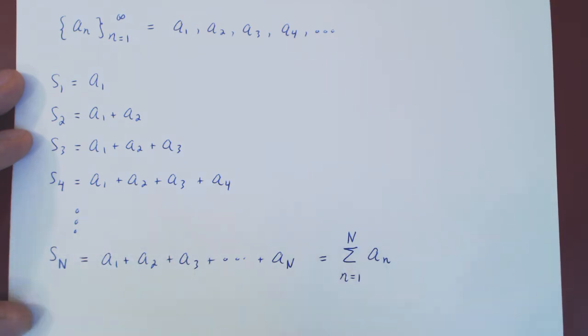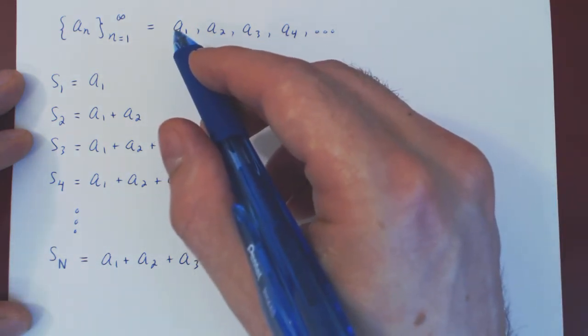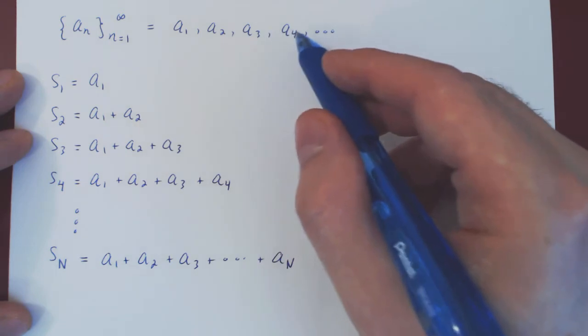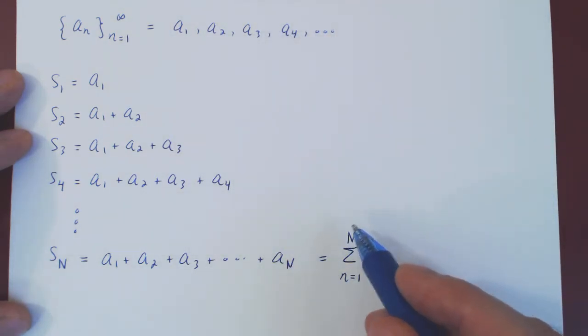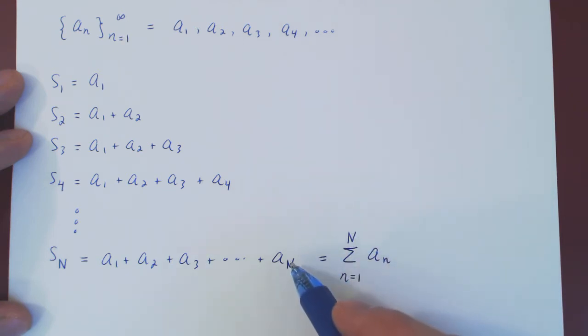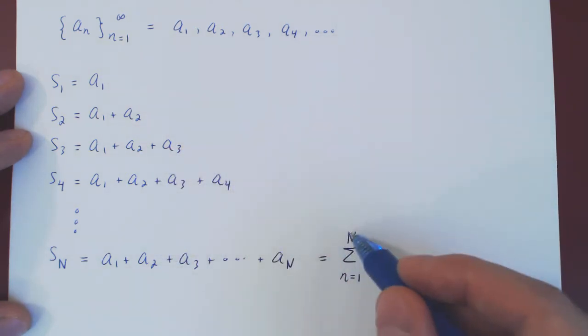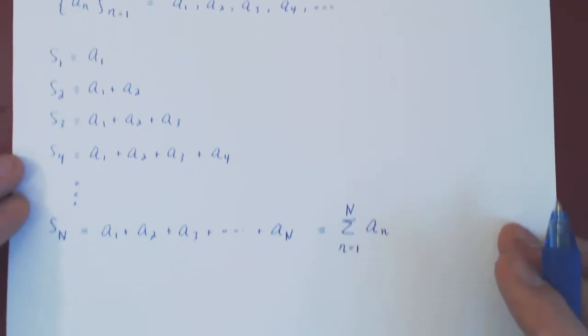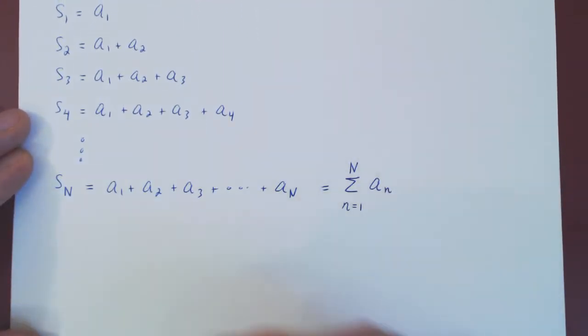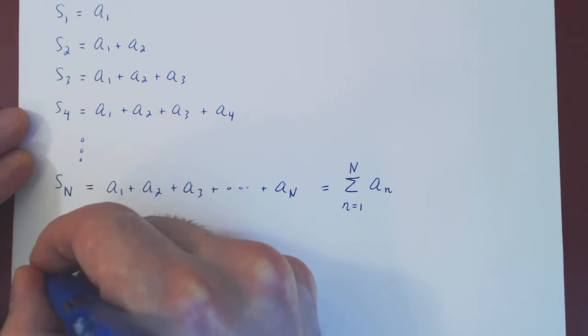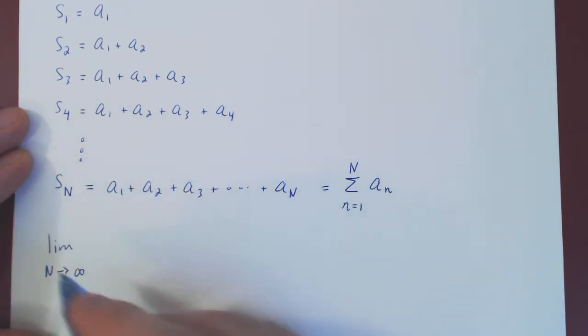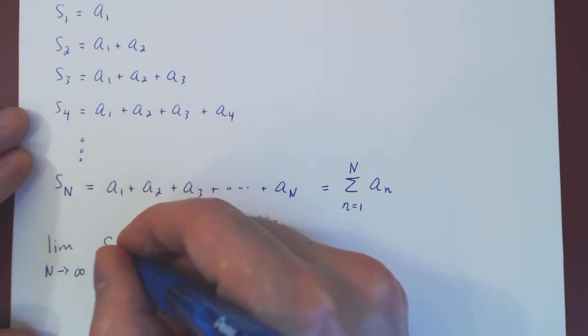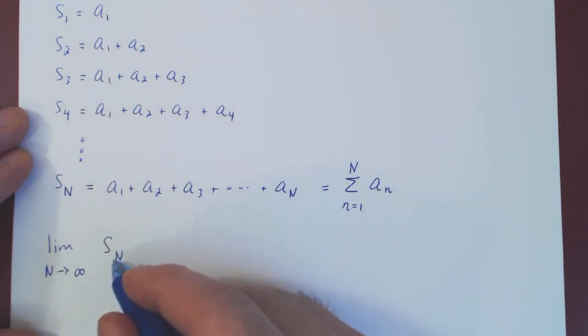And now again, our goal is to try and possibly add all the terms of our sequence, so we have to, to obtain this, let uppercase N, the number of terms we're adding from the sequence, approach infinity. And this is really what we're interested in. So we take the limit as uppercase N goes to infinity of our sequence of partial sums. S_N is us summing the first positive uppercase N terms of our sequence.